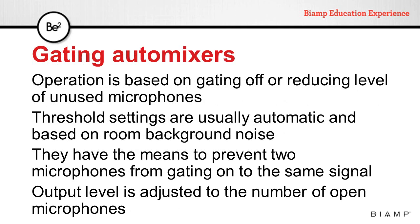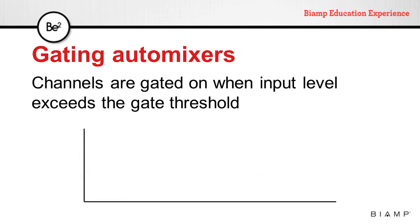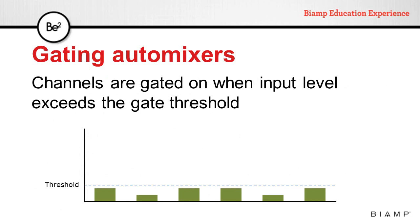The operation principle of a gating automatic mixer is based on gating off or reducing the level of unused microphones. Since the input is being controlled by a gate, there is a threshold setting that is automatically adjusted to background noise. They have the means to prevent two microphones from gating onto the same signal, and the output level is adjusted to compensate for the number of open microphones. Gating automatic mixers use the microphone's inputs to detect background noise and automatically set the threshold. If all microphone levels are below the threshold, they are kept gated off. Once the level of one input is above the threshold, that channel will be gated on.